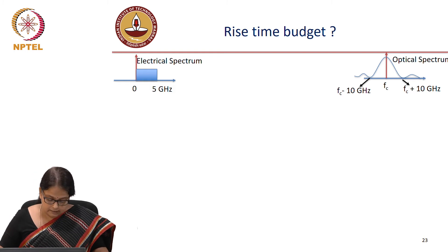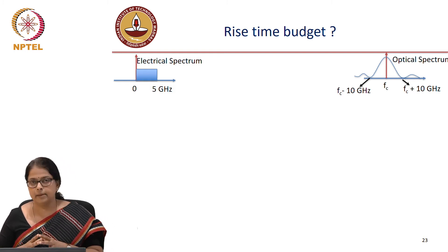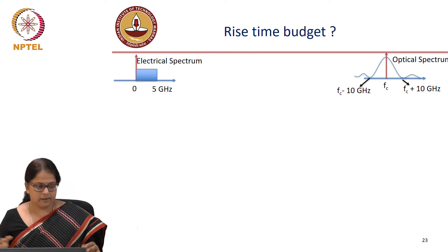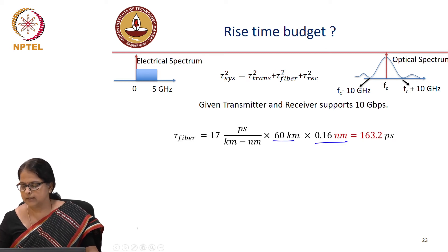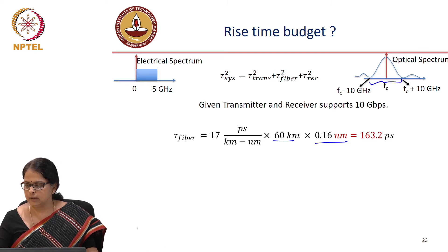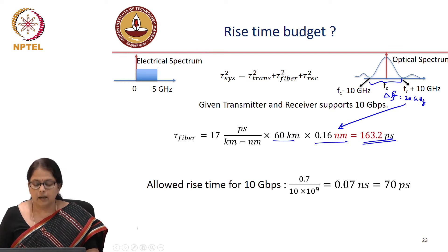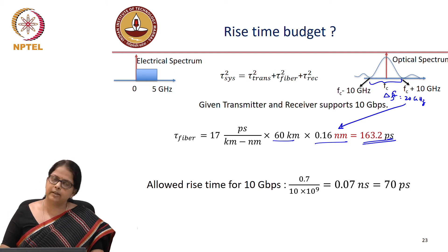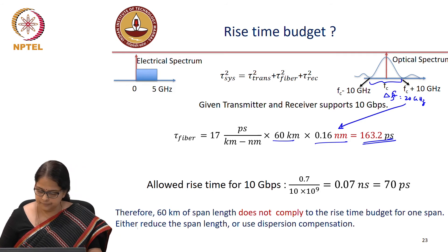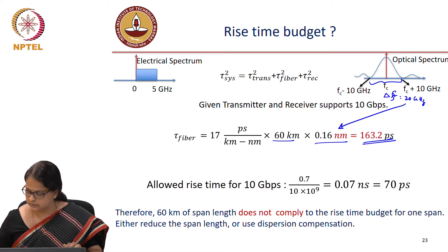Last time we had stopped at this point, evaluated the rise time budget, and found it did not comply — and the same case applies here. For a 60 km fibre, the total spectral spread is 0.6 nm and we are still at 10 GHz null, so taking delta-lambda delta-f as 20 GHz, that corresponds to 0.16 nm, giving 163 picoseconds of dispersion. The allowed rise time for a 10 Gbps system is 0.7 divided by 10 Gbps, which is 70 ps. The introduced rise time is larger than allowed, so we definitely need to do dispersion compensation. A 60 km span does not comply with the rise time budget.